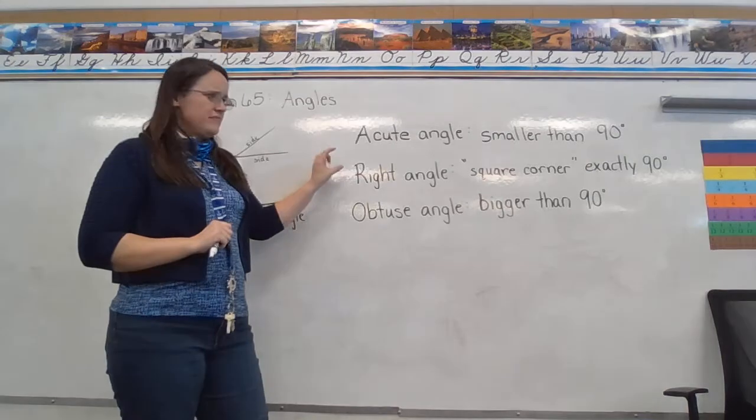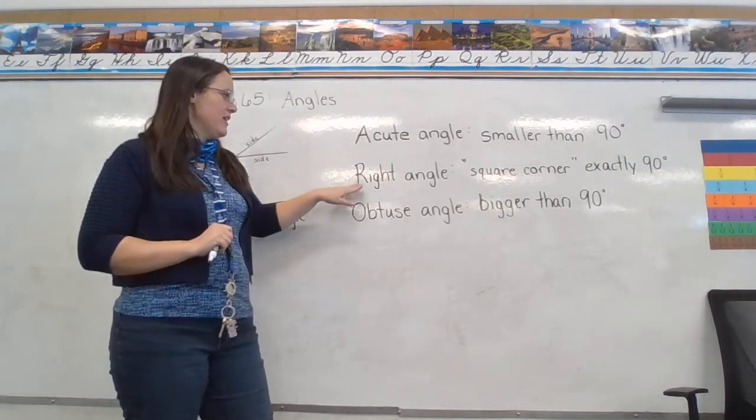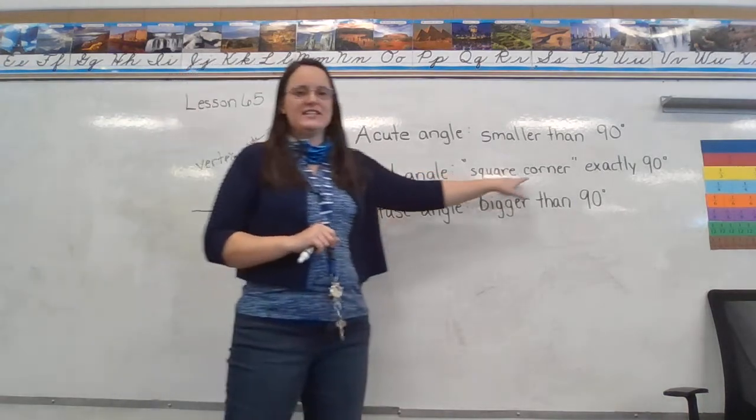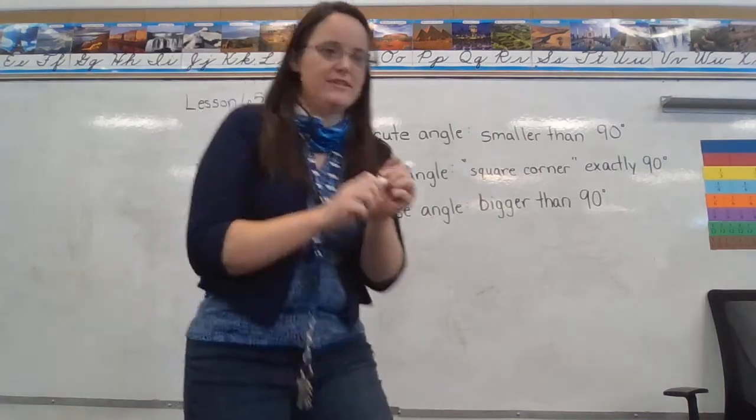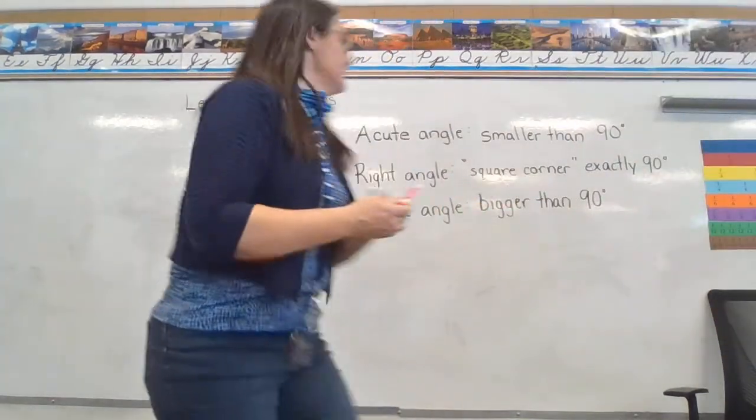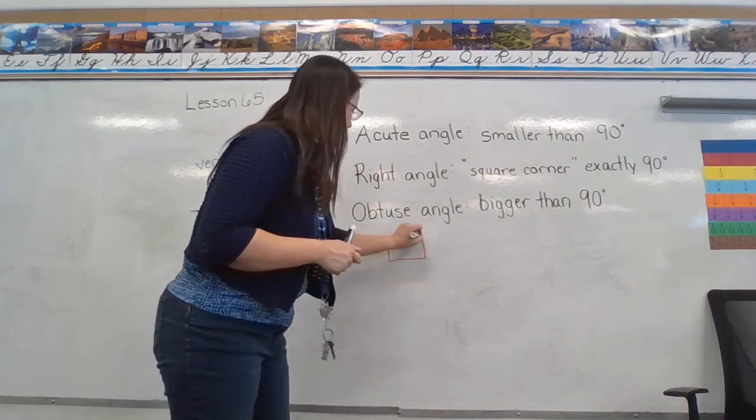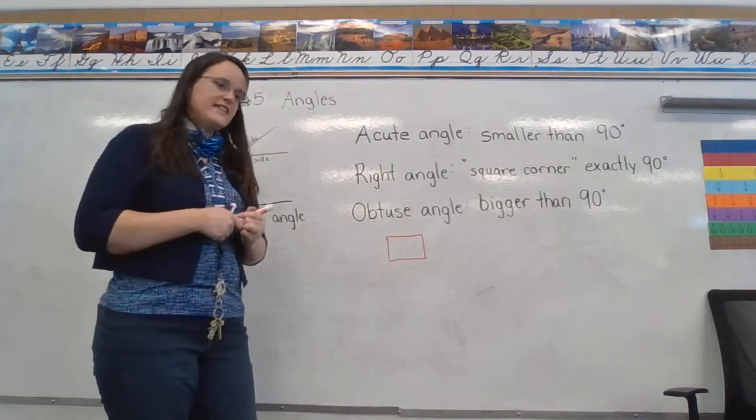So even though it's in the middle here, this is the first one I'm going to talk about. A right angle is what you guys have typically called a square corner. So we see a shape, let me grab a different color.